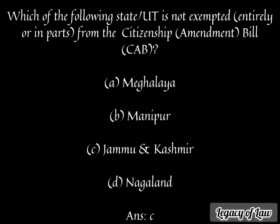The next question is: which of the following states or union territories is not exempted entirely or in parts from the Citizenship Amendment Bill? The four options are — first is Parliament of India, second is Manipur, third is Jammu and Kashmir, and fourth is Nagaland. The answer is Jammu and Kashmir.